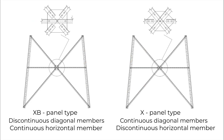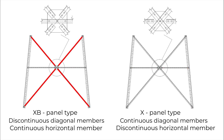Group 2. Let's illustrate the subdivide arrangement for X and XB panel types. There is a key difference: in the X panel, the diagonal members are connected continuously while the horizontal member is connected discontinuously. In the XB panel, the diagonal members are connected discontinuously while the horizontal member is connected continuously. This difference affects the calculation of the buckling length of the diagonal and horizontal members.